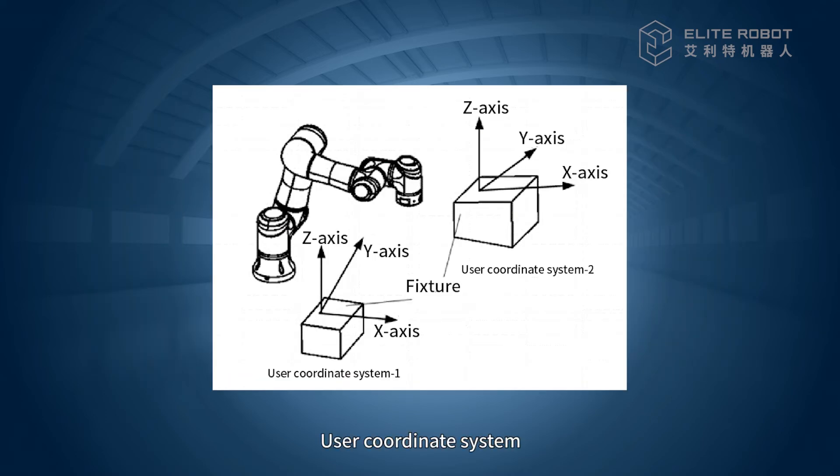User coordinate system is a coordinate system created to simplify the program. The coordinate origin and coordinate direction can be defined by a three-point method according to the actual needs. Please see the video user coordinate system for specific methods.